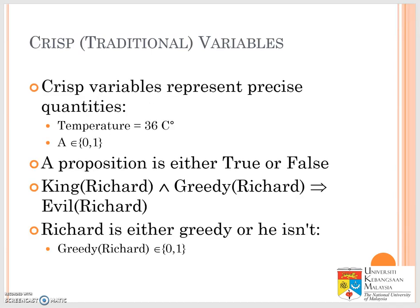Traditionally, in knowledge representation, we use crisp boundaries, which means we have a sharp boundary between values — whether true or false. You can see this especially in logic: if A is true and B is true, then both will be true.